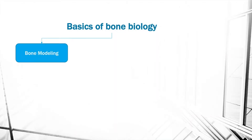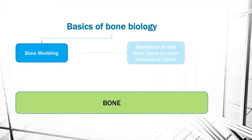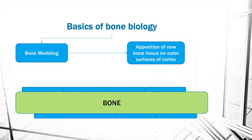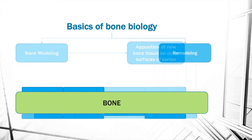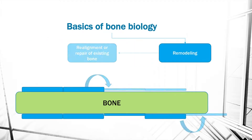Bone biology consists of bone modeling and bone remodeling. Bone modeling is apposition of new bone tissue on outer surfaces of cortex, whereas bone remodeling is realignment or repair of existing bone.